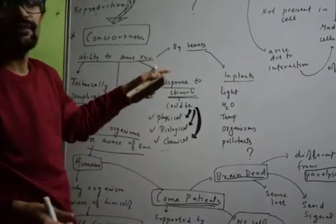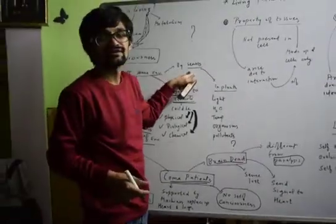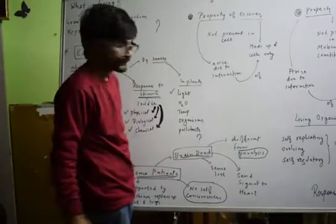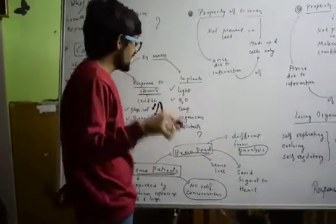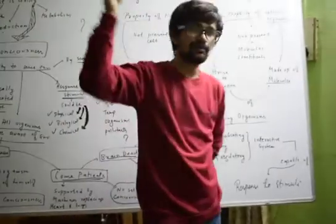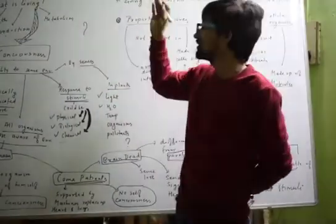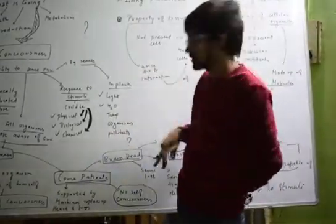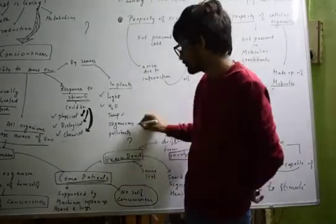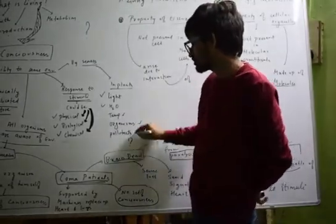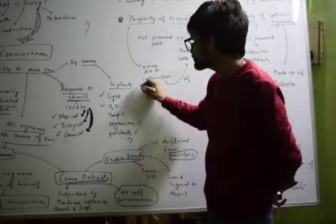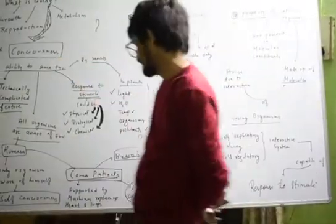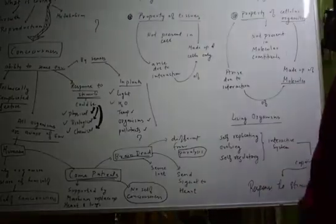The ability to sense the environment is carried out by the sense organs. In plants, they respond to light, water, temperature, certain organisms, and pollutants. In light, the shoot portion moves towards the sunlight. In water, the root moves downwards. So plants also respond to these factors and that's why they are considered conscious.